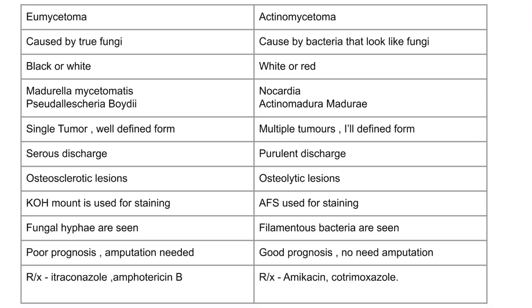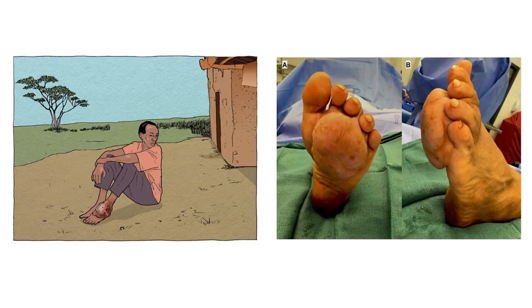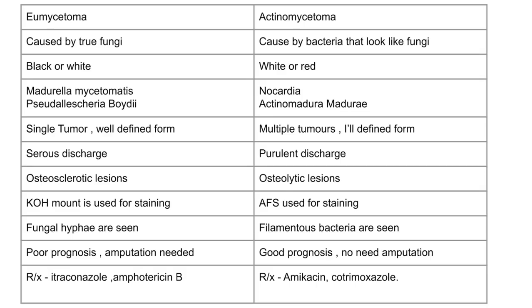Eumycetoma has a poor prognosis and amputation is mostly needed. Actinomycetoma, however, can be treated with drugs. The drugs used for eumycetoma are itraconazole and amphotericin B, whereas for actinomycetoma, amikacin and cotrimoxazole are used. The final image shows a picture of eumycetoma.